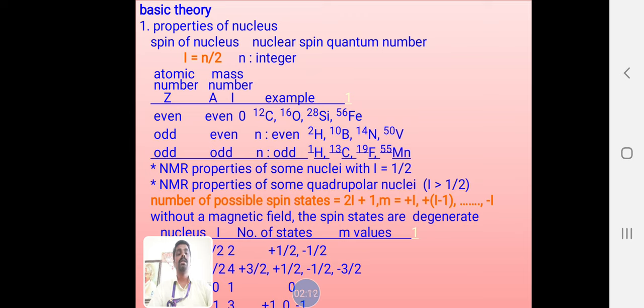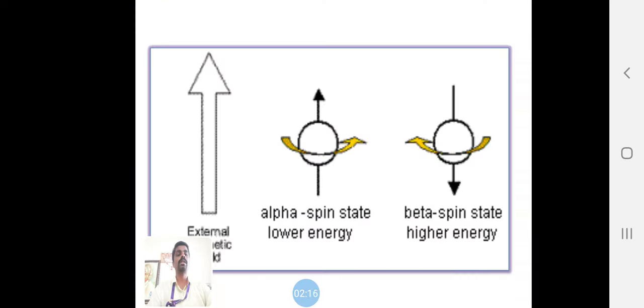This is the NMR technique. The nucleus will spin in up direction as well as down direction. We can observe the action energy.